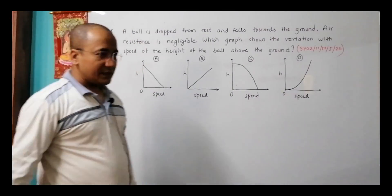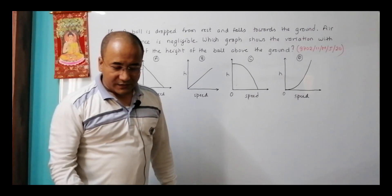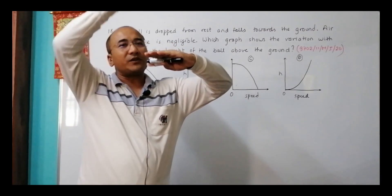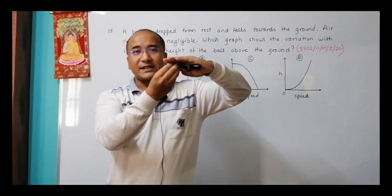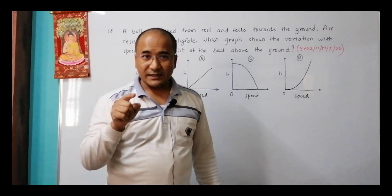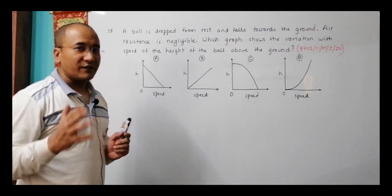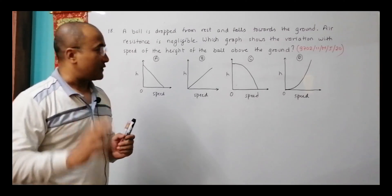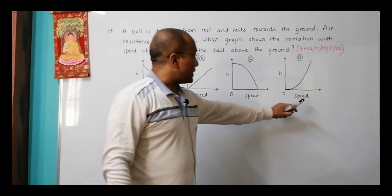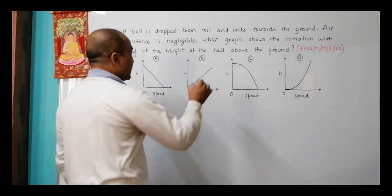When the ball is dropped, speed goes on increasing and the height from the ground goes on decreasing, because height is measured from below to the ball's position. As it falls downward, the height decreases and speed increases. So among the given graphs, two immediately disqualify — graphs B and D — because in those graphs speed increases and height also increases, which is the opposite of what we expect.